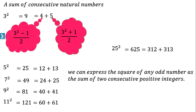Remember, we can express the square of any odd number as the sum of two consecutive positive integers. We cannot express the square of an even number as the sum of two consecutive positive integers. The examples 3, 5, 7, 9, 11, and 25 are all odd numbers, so we can express the square of any odd number as the sum of two consecutive positive integers.